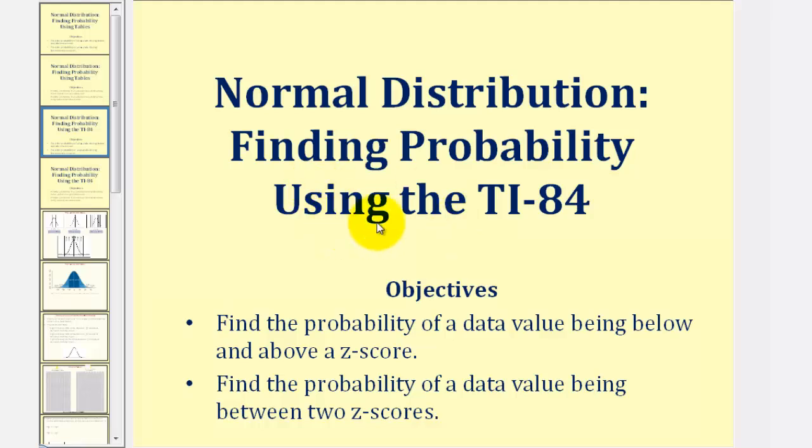Welcome to a lesson on how to use the TI-84 graphing calculator to find the probability of a data value being below and above a given z-score in a normal distribution, and also how to find the probability of a data value being between two z-scores.